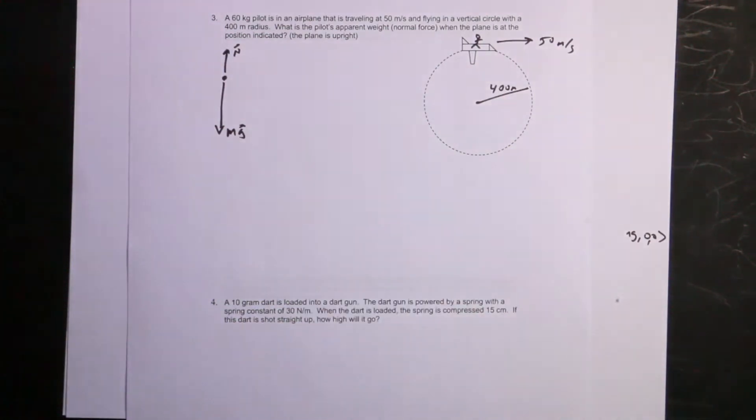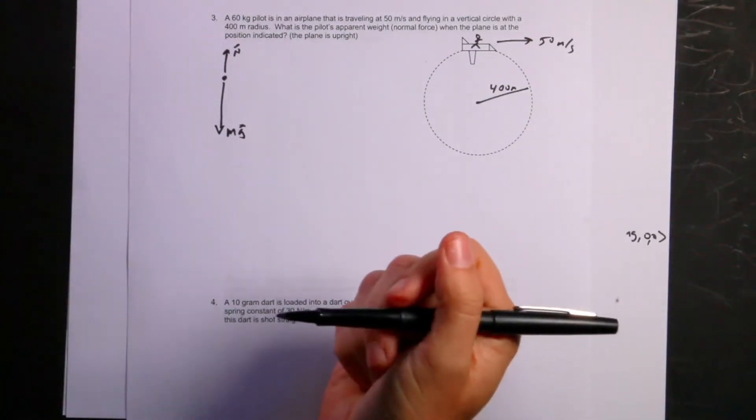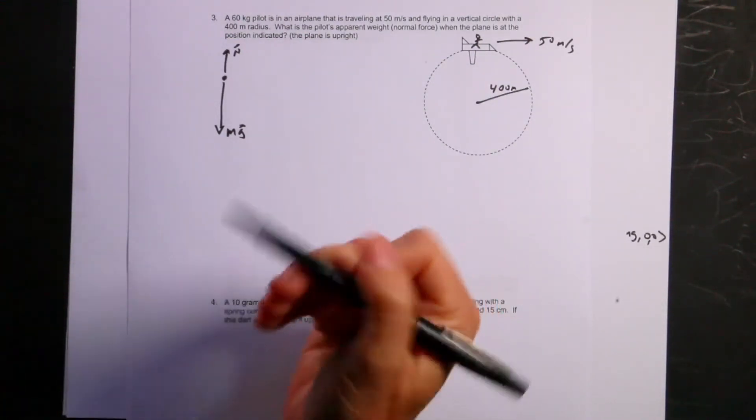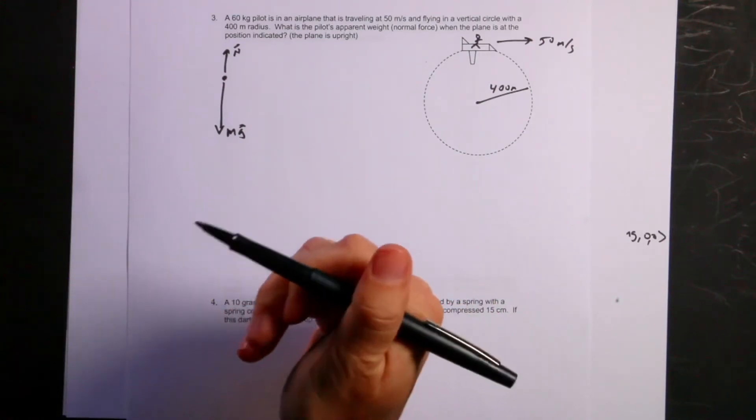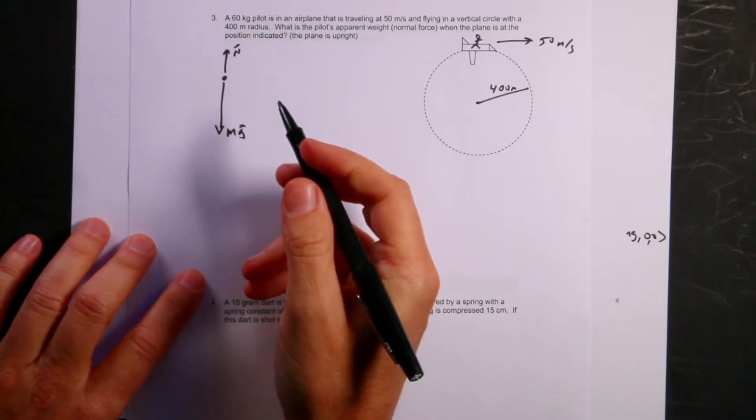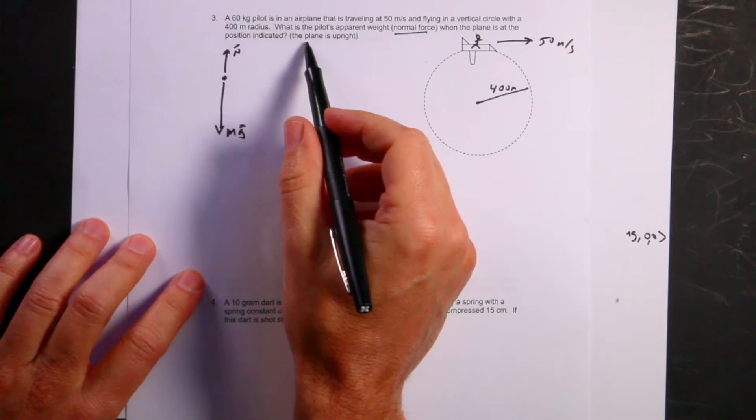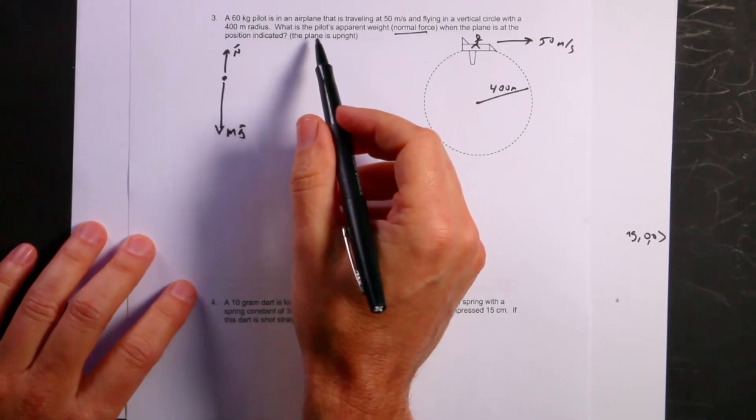This idea of apparent weight being equal to the normal force, I think I covered it fairly well. But that's something I wouldn't really put on a test and expect students to know offhand. But I did say normal force, so that's fine. And the plane is upright. That's important, too.